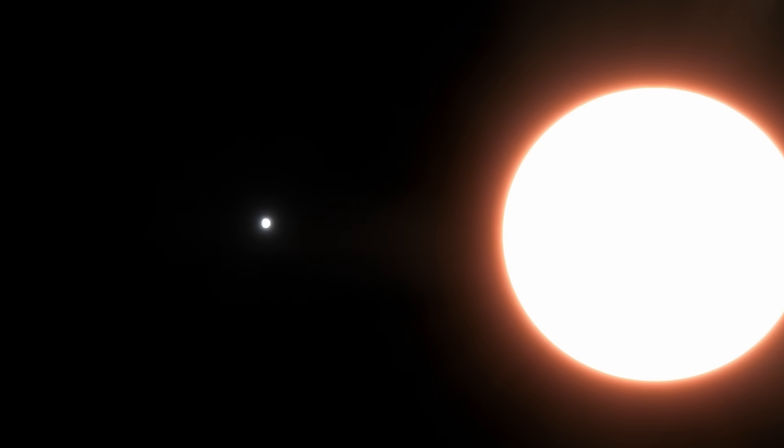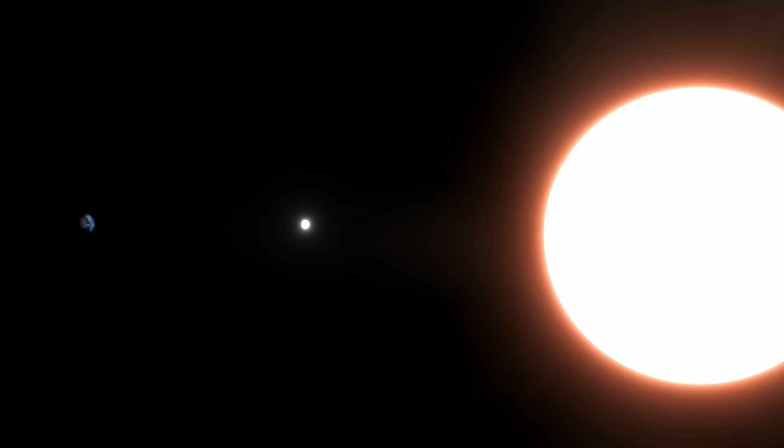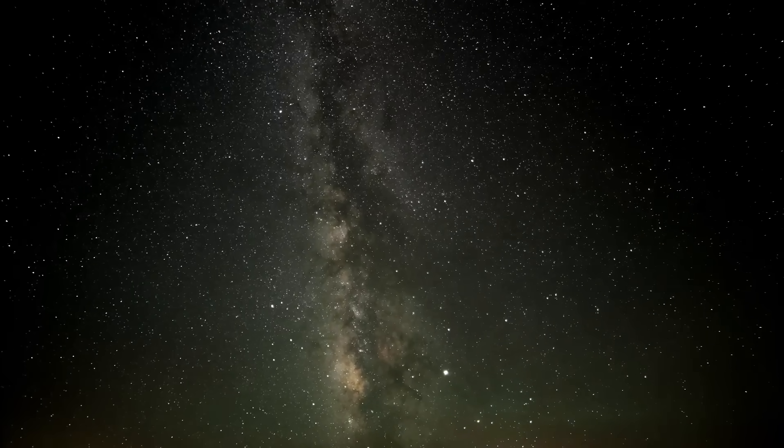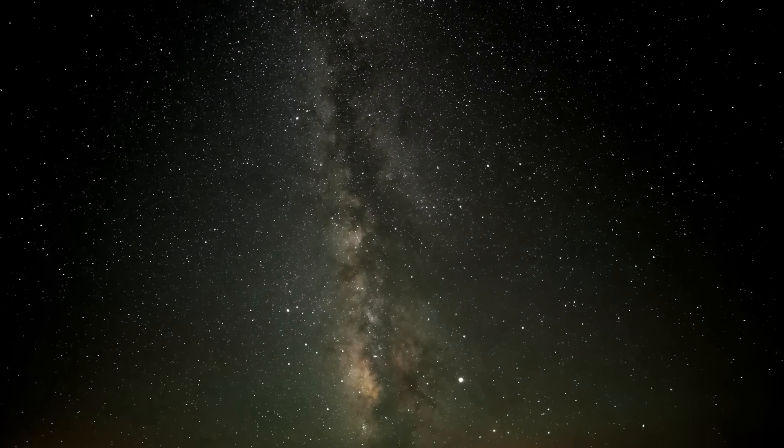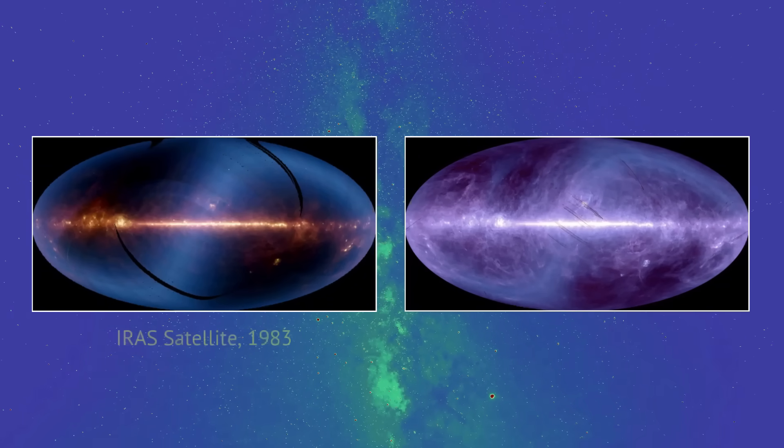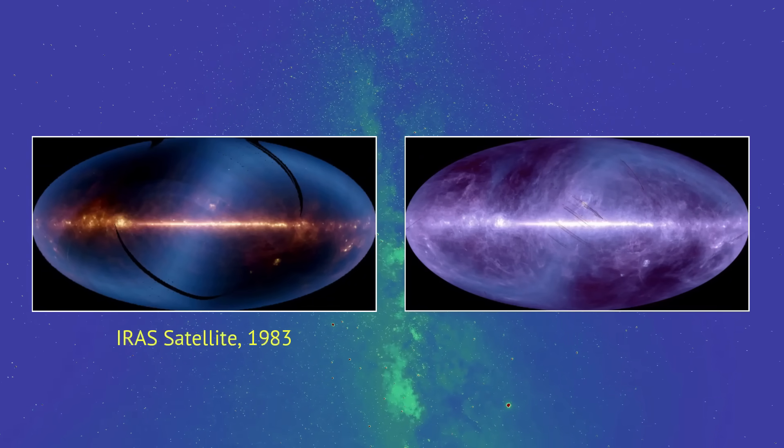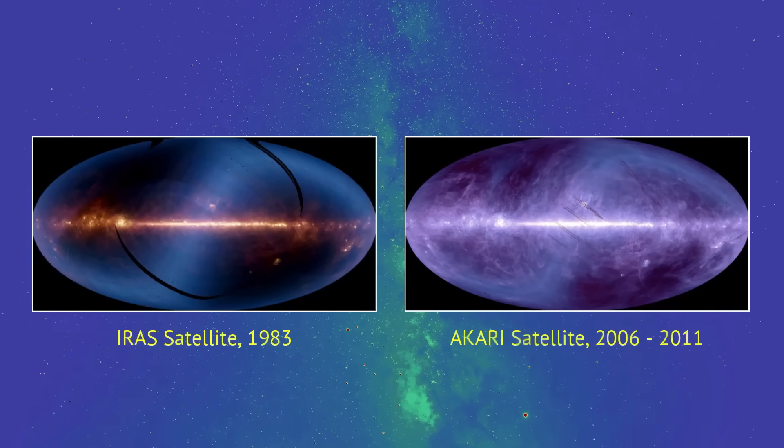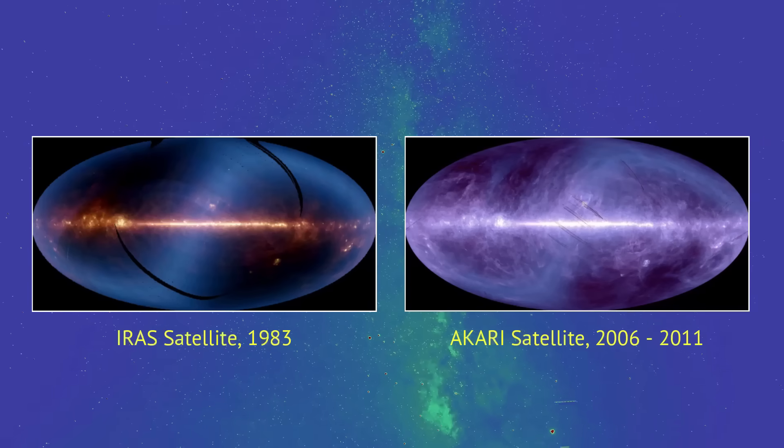Now the farther away something is, the harder it is to see, especially if it doesn't reflect much sunlight. So to find Planet Nine, scientists went digging through two infrared surveys of the sky. One taken by the IRS satellite back in 1983, and another by Japan's Akari mission between 2006 and 2011.